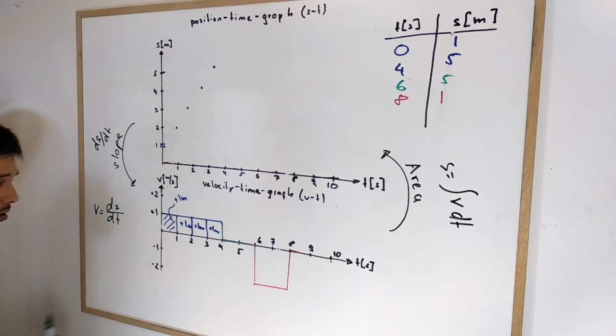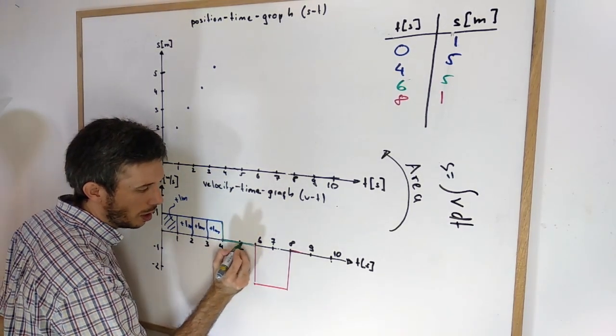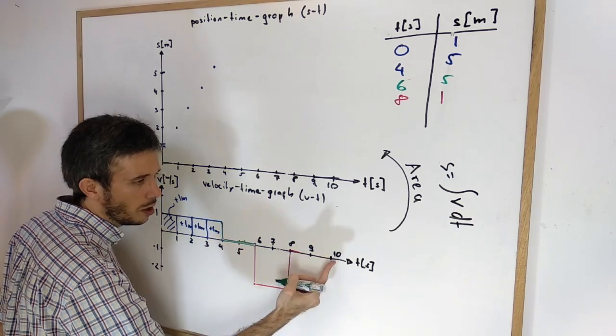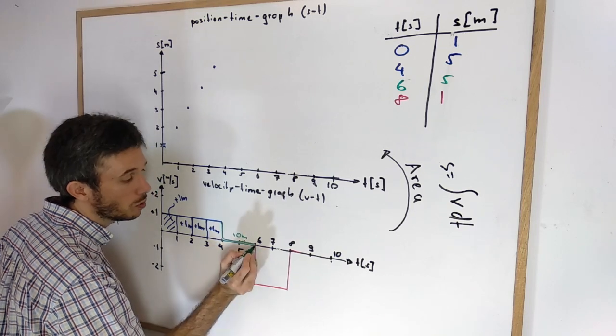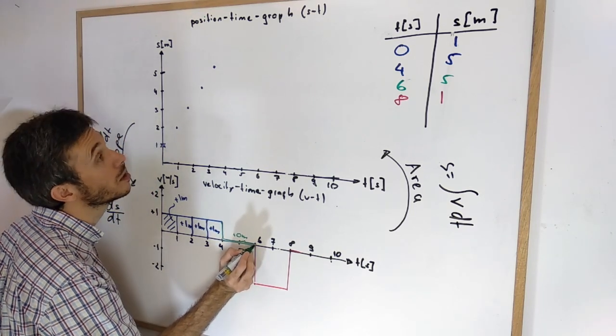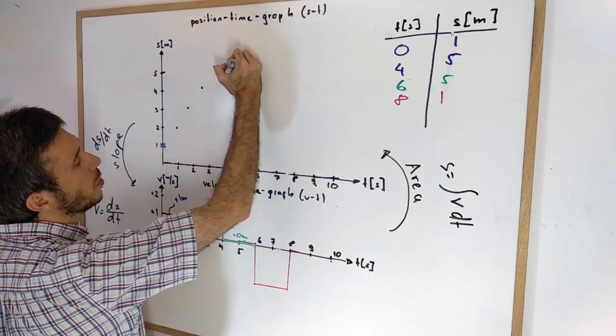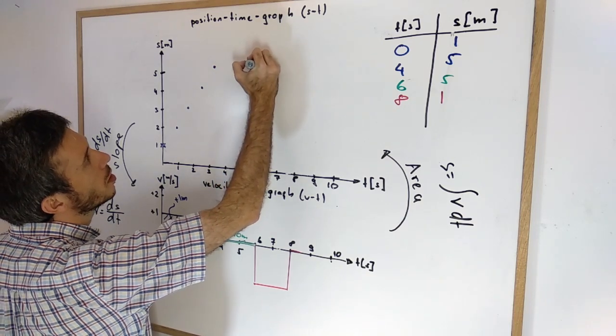Then for the next 2 seconds absolutely nothing happens. I have no area between my x-axis and the graph. So plus 0 meters for the next 2 seconds. So nothing happens. So 5, 6 nothing happens.